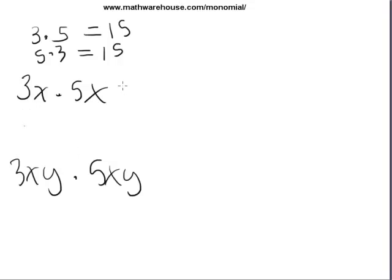And we can do the same thing for larger expressions like this. 3x times 5x. Remember, this is really 3 times x times 5 times x. All of these can be rewritten any way we want. It's the same as 3 times 5 times x times x, or any other way that you would like to arrange the terms.